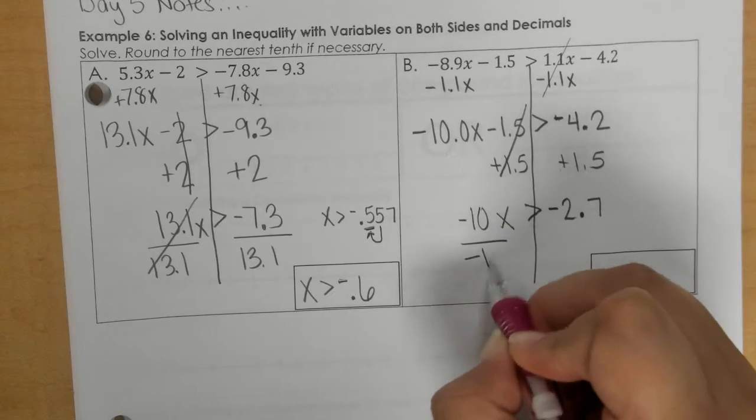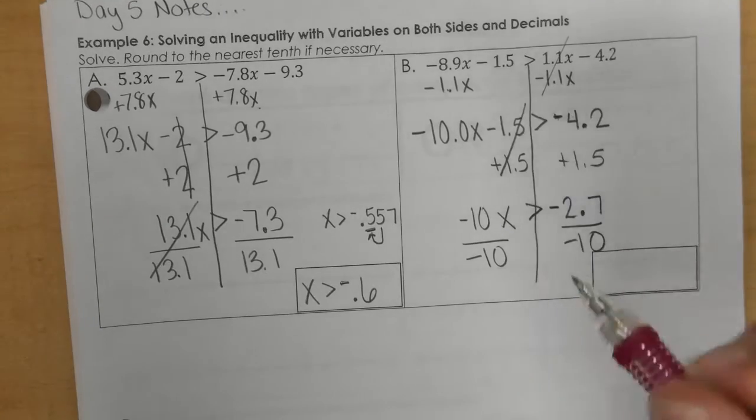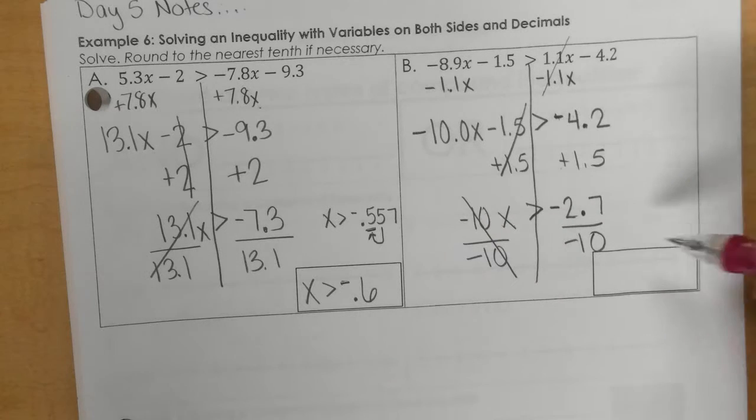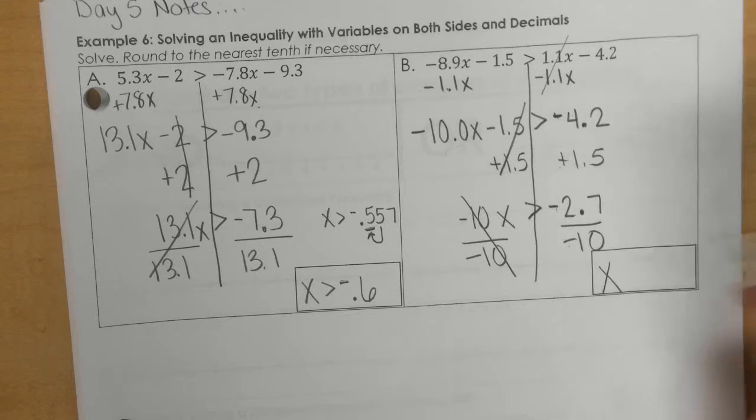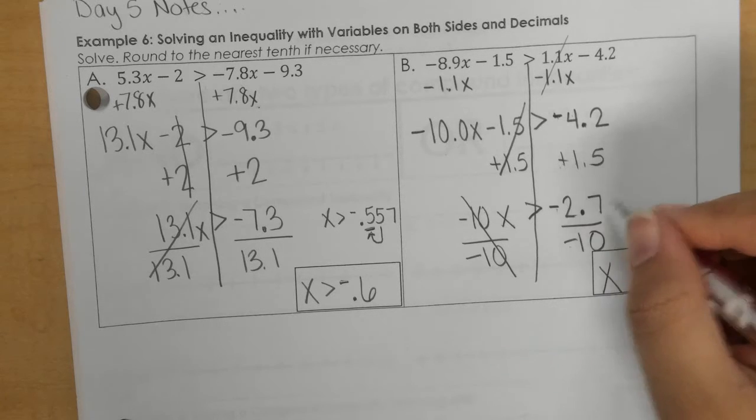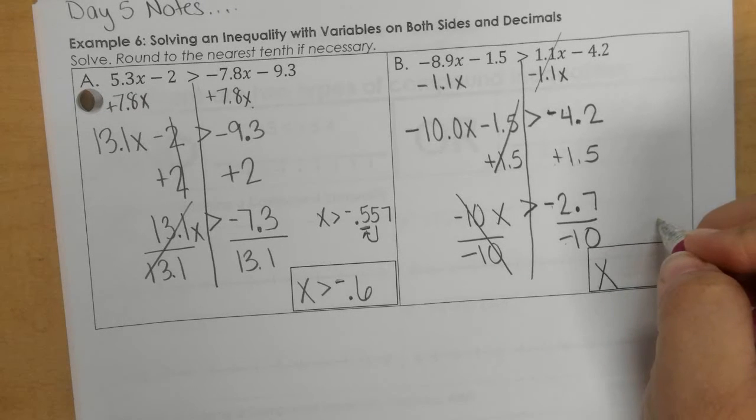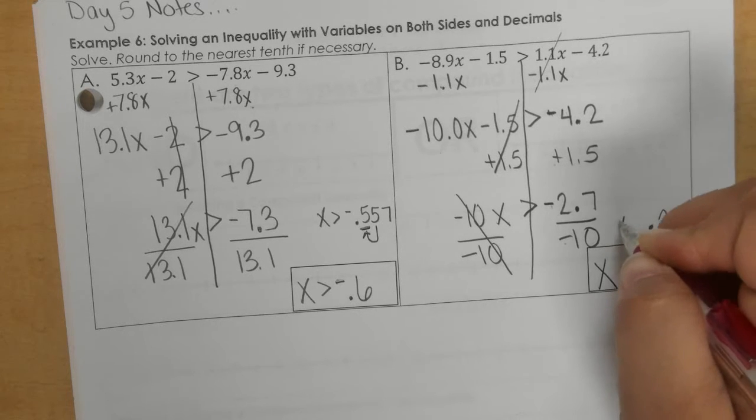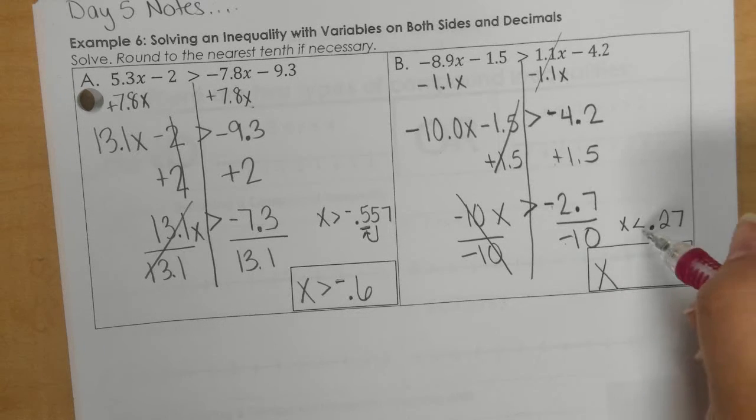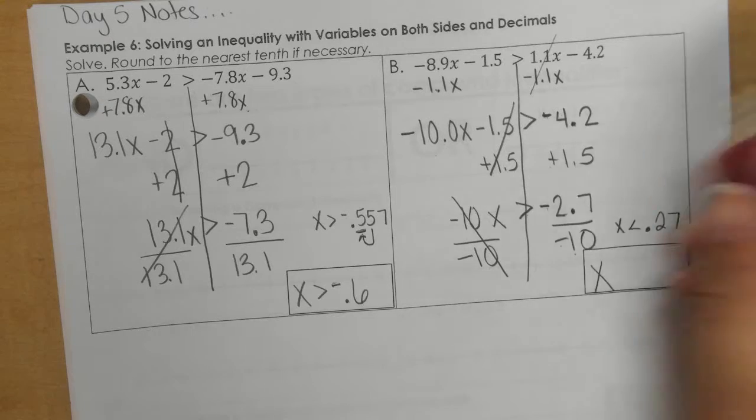And I'm dividing by negative 10. So, a negative divided by a negative is a positive. If I divide this, I'm really just moving the decimal. So I get 0.27. And I need to flip the inequality around, because I divided by a negative.